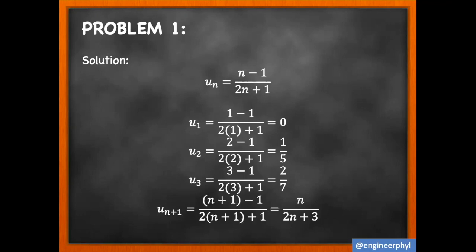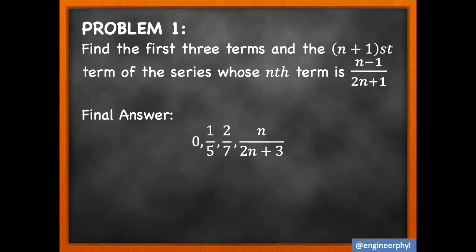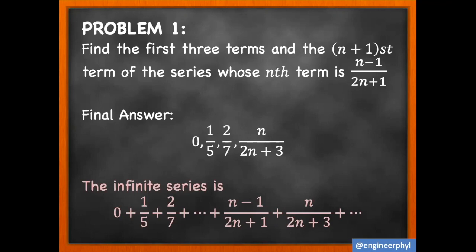Now solving for the (n+1)th term, we substitute (n+1) for n: (n+1 − 1) / (2(n+1) + 1), which simplifies to n / (2n + 3). Our final answer: the first term is 0, the second term is 1/5, the third term is 2/7, and the (n+1)th term is n / (2n + 3). The infinite series is written as 0 + 1/5 + 2/7 + and so on.